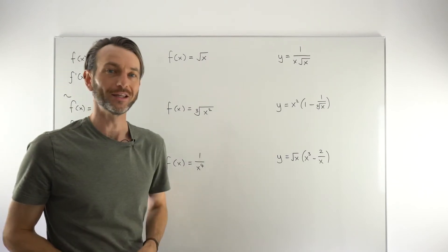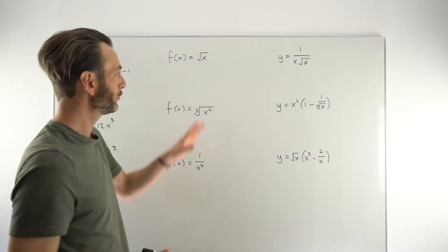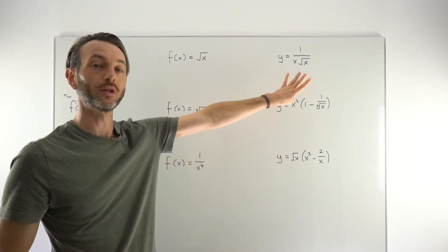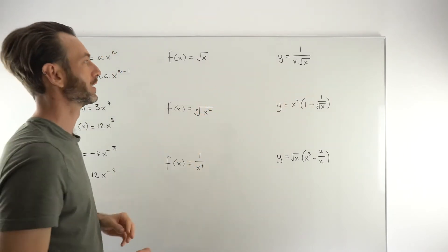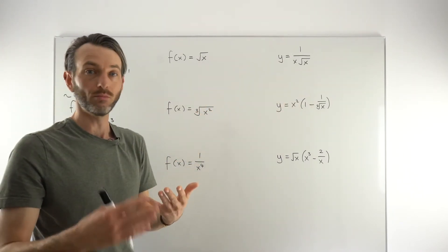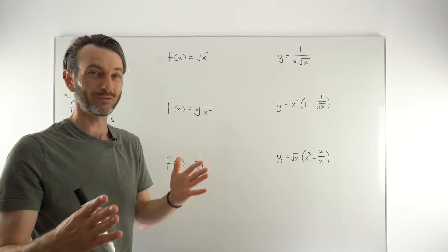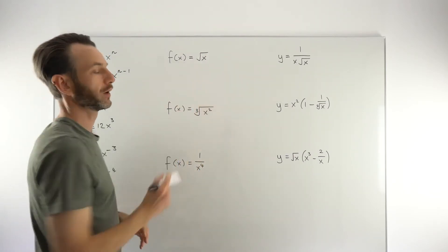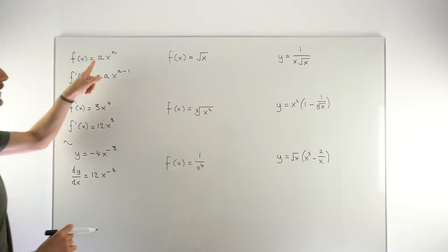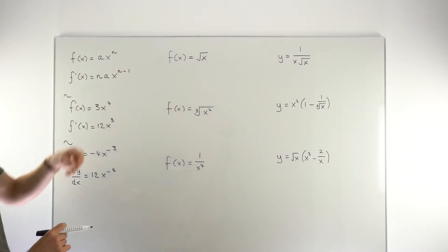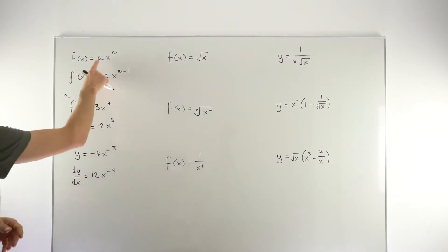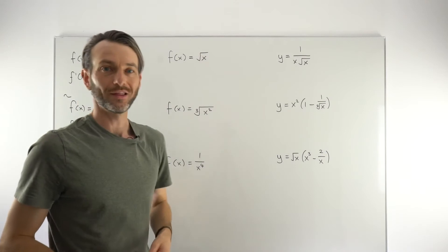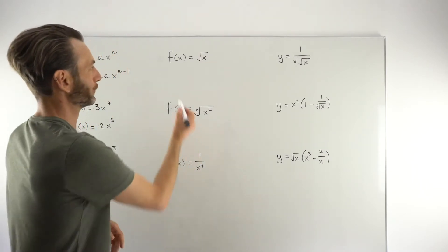Let's take a look at these examples, which are all fairly common scenarios that students struggle with. What we need to do is take one or more — sometimes several — lines of work to get the original function into a form that looks like AX to the N, where A and N can be fractions. Once it's in that format, then we can apply the power rule.